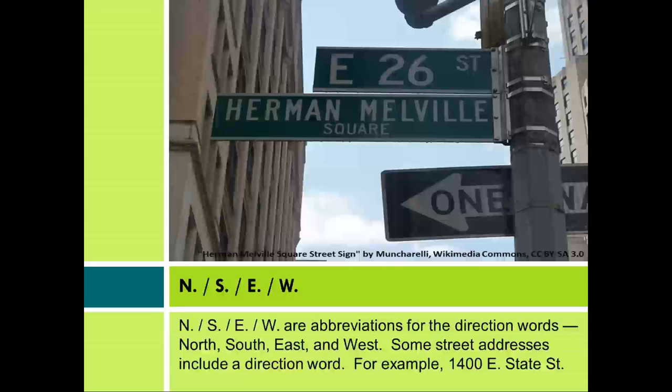N, S, E, W are abbreviations for the direction words North, South, East, and West. Some street addresses include a direction word. For example, 1400 East State Street.